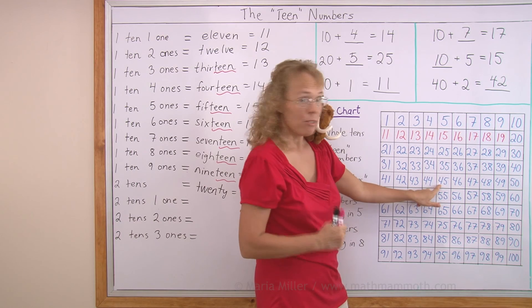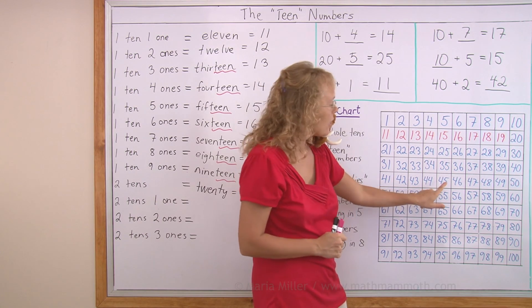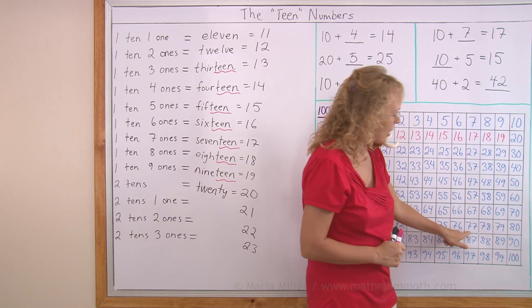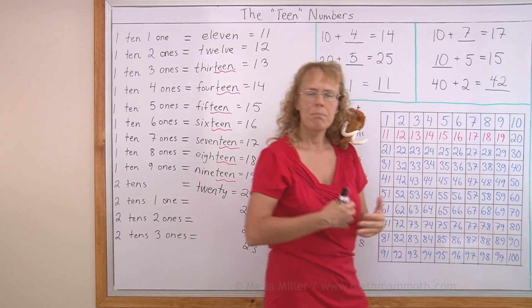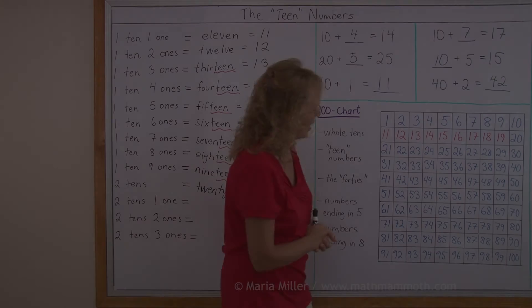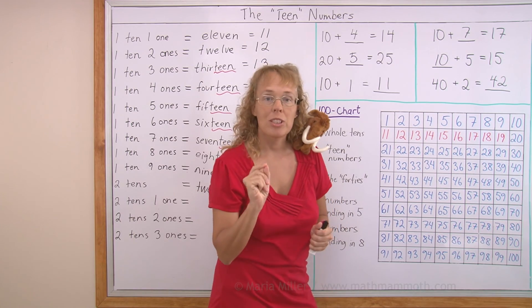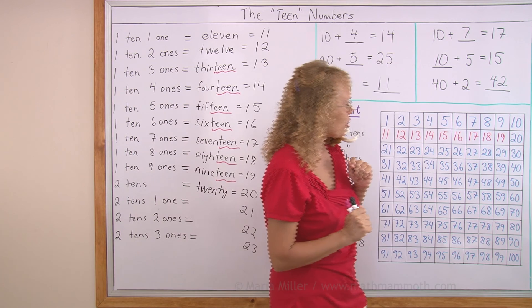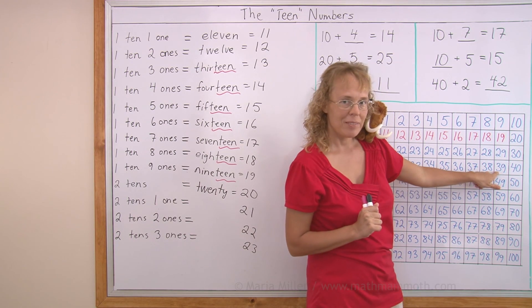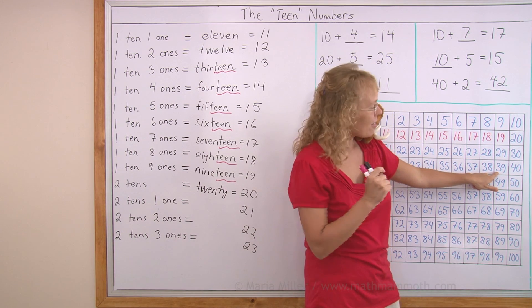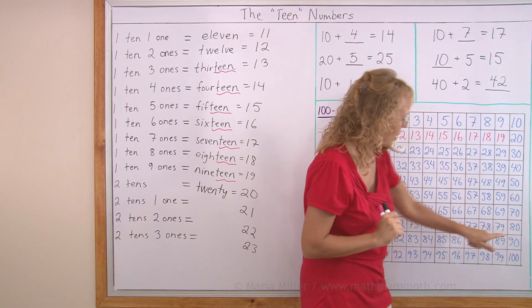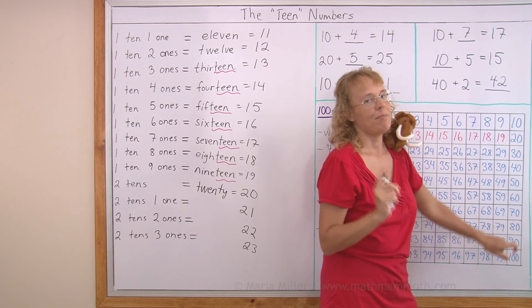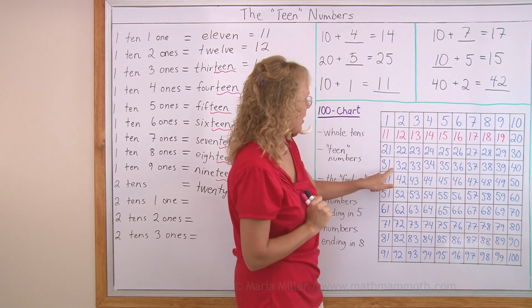Remember 14 means 1 ten and 4. Okay. Here, for example, is a number 45. It means 4 tens and 5. Over here 7 tens and 7, 77. Now, let me point to a few numbers and you try to say them. Can you tell the name of the number that I point to? This one: it's 3 tens and 9, 39. This one: 80, 8 tens, yes.